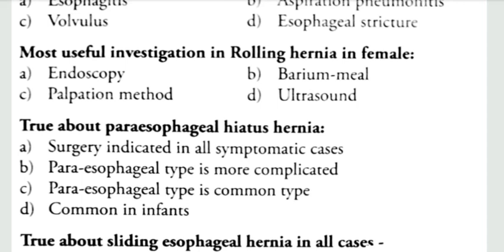Third question: what is true about paraesophageal hiatal hernia? The options are: surgery indicated in all symptomatic cases; paraesophageal type is more complicated; paraesophageal type is more common; or it is common in infants. The correct answers are that surgery is indicated in all symptomatic cases, and paraesophageal type is more complicated. The wrong options are: paraesophageal type is not the most common — sliding hiatal hernia is the most common — and it is not common in infants.